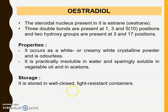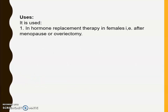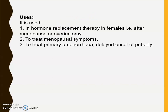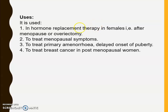Storage: it is stored in a well-closed, light-resistant container. Uses: it is used in hormone replacement therapy in females — after menopause or oophorectomy (surgical removal of one or both ovaries). It is used to treat menopausal symptoms, dysmenorrhea-like symptoms, primary amenorrhea, and delayed onset of puberty. It is also used to treat breast cancer in postmenopausal women and prostatic carcinoma in men.